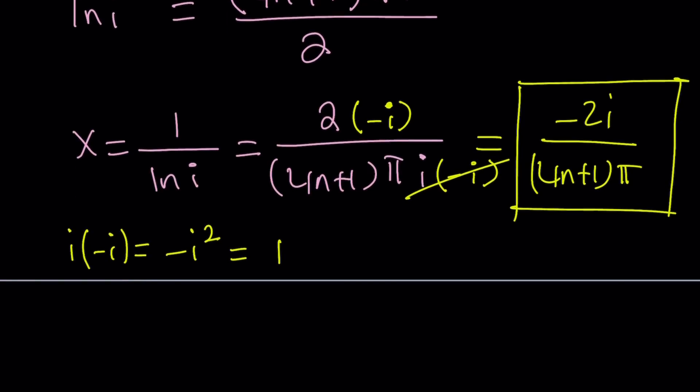Now, if you replace n with certain values of integers, like n equals 0, would be the principal branch. We talked about it already. Then you're going to get a simplified version of x, which is negative 2i over π.